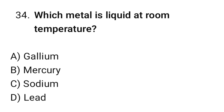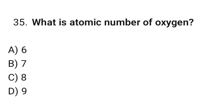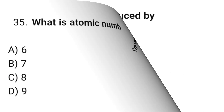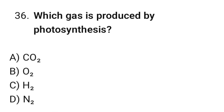Question number 34: Which metal is liquid at room temperature? The correct option is B — Mercury. Question number 35: What is the atomic number of oxygen? The correct option is C — 8. Question number 36: Which gas is produced by photosynthesis? The correct option is B — O2.